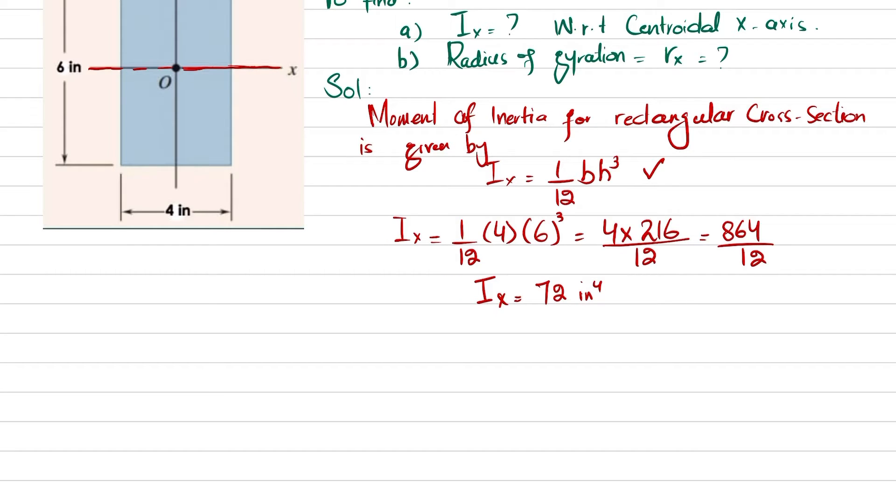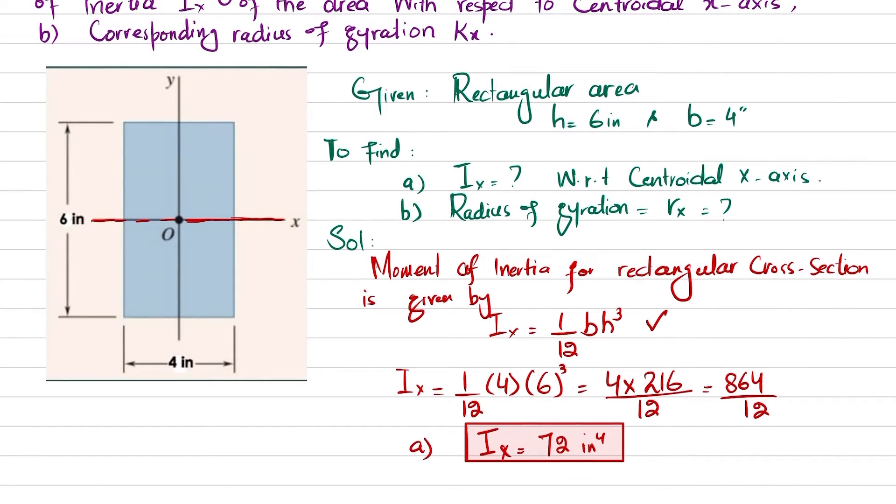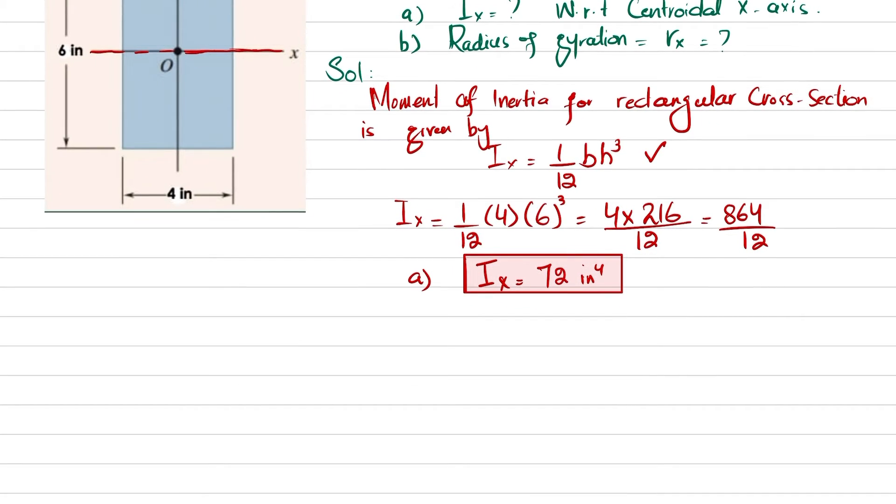And that will be 72 inch to the power four. So this is your moment of inertia about centroidal x-axis. Now we'll move towards our second part, and in second part we have been asked to find the radius of gyration.